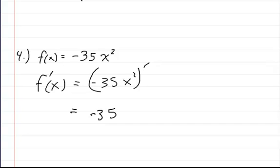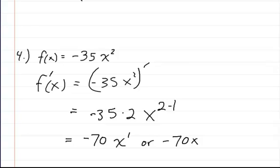So you're going to have your negative 35 times 2x squared minus 1. So that's going to be negative 70 of x to the 1st. Or you could just rewrite it as negative 70 times x.